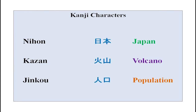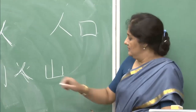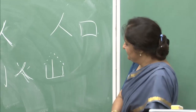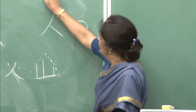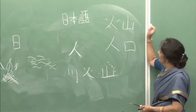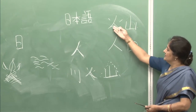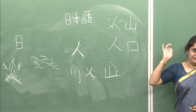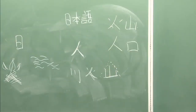Here is one more very simple example. You have done fire. What is a volcano? A volcano throws fire. A mountain looks like this — with the base it looks like a mountain. If you have fire and mountain together, automatically — even if you do not know the word — you know that this is a mountain which throws fire, so it is a volcano. That is how these kanji characters have come into being.